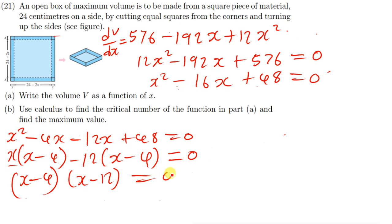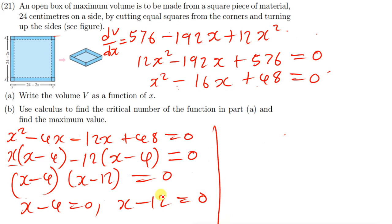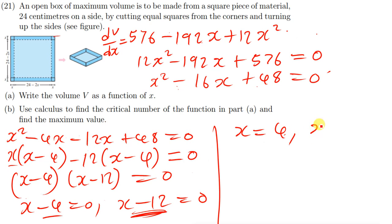Equating each factor to zero: x − 4 = 0 gives x = 4, and x − 12 = 0 gives x = 12. So our two critical values are x = 4 and x = 12.